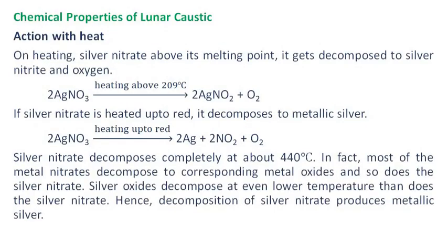Regarding chemical properties — action with heat: on heating silver nitrate above its melting point, it decomposes to silver nitrite and oxygen. If silver nitrate is heated up to red heat, it decomposes to metallic silver. Silver nitrate decomposes completely at about 440 degrees Celsius. Most metal nitrates decompose to corresponding metal oxides; however, since silver oxide decomposes at an even lower temperature than silver nitrate, decomposition of silver nitrate ultimately produces metallic silver.